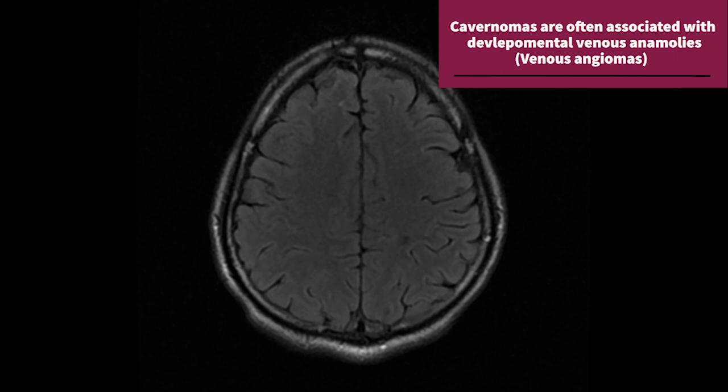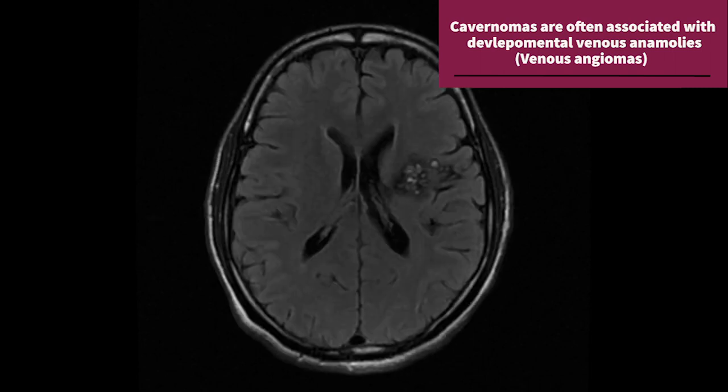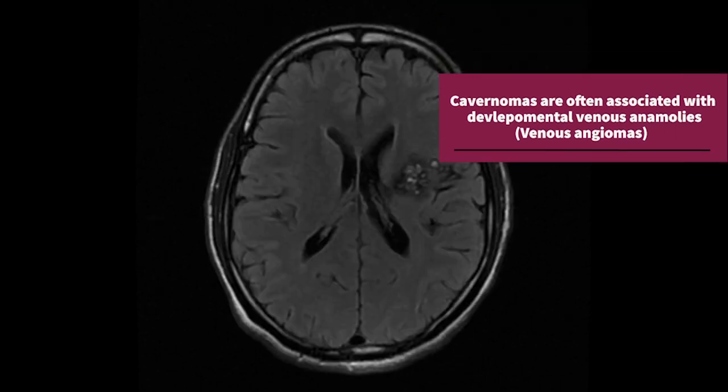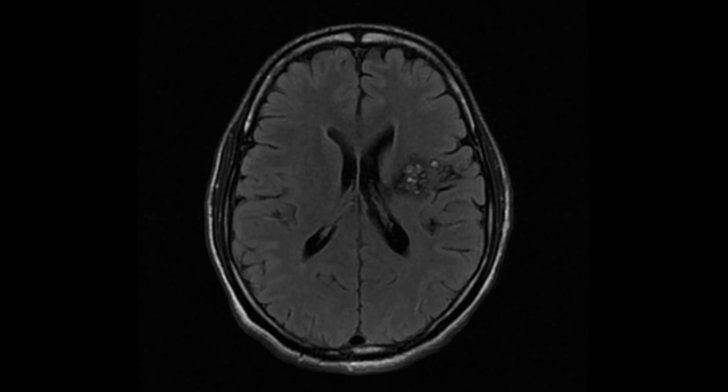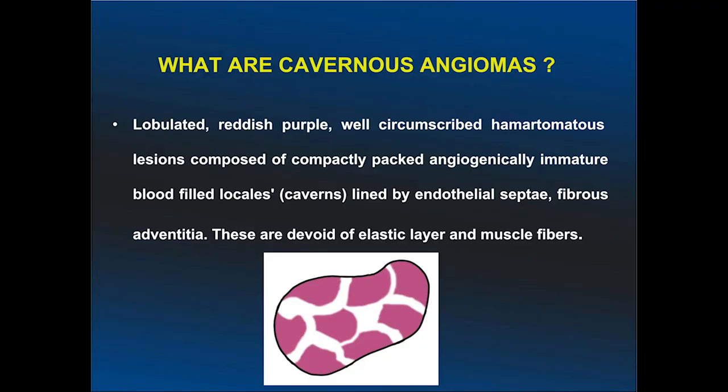Cavernomas can be associated with developmental venous anomalies, also known as venous angiomas. Whenever you find a cavernoma, you should search for an associated venous angioma.